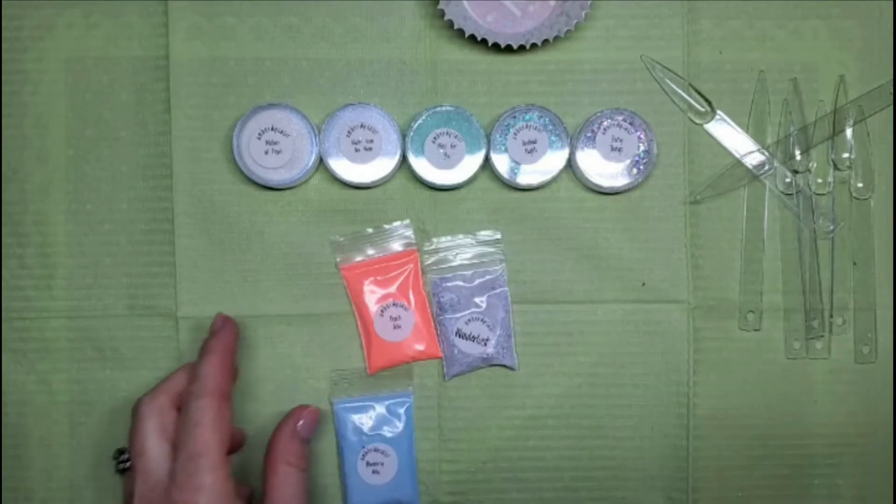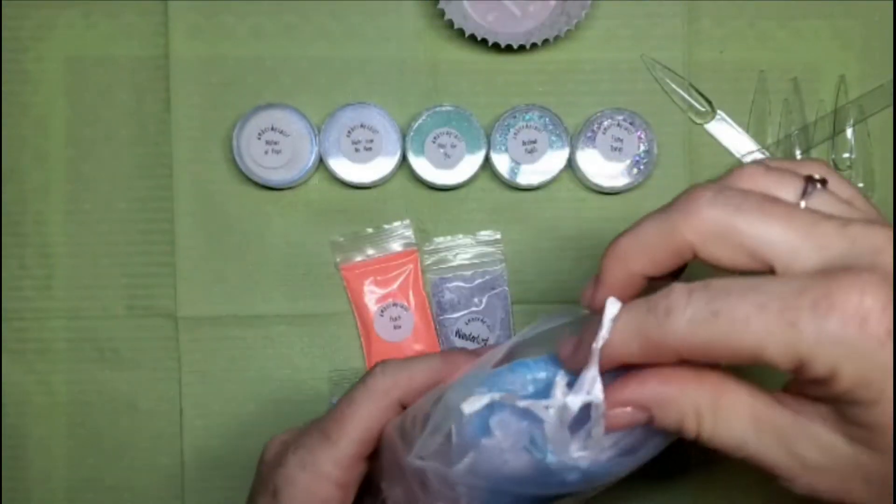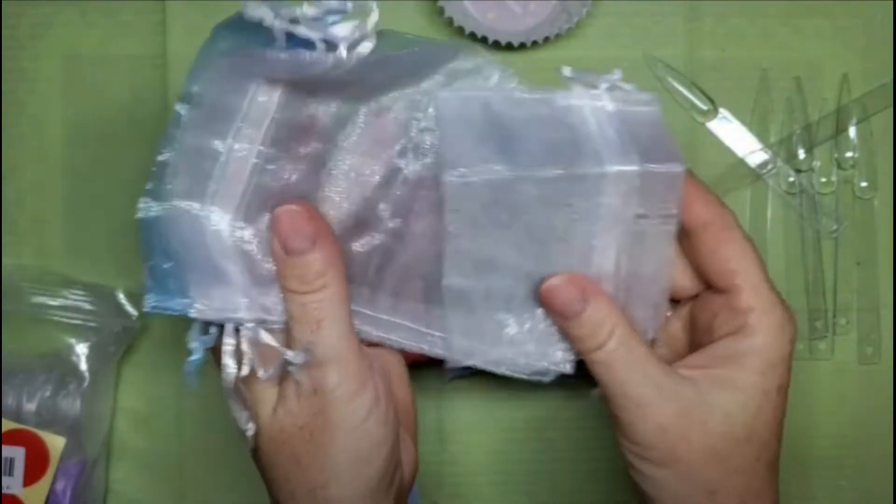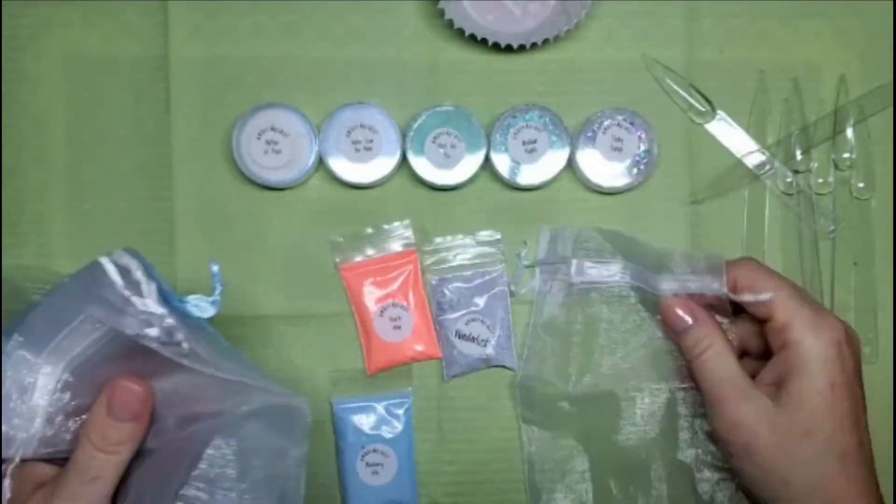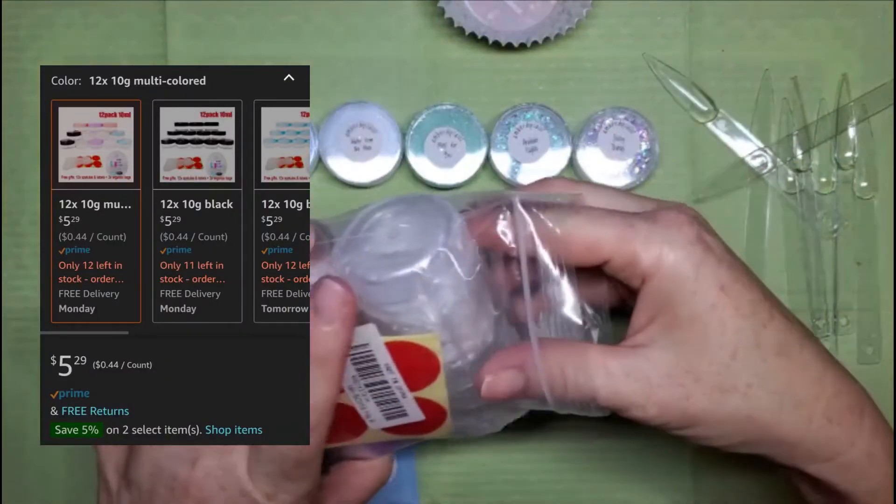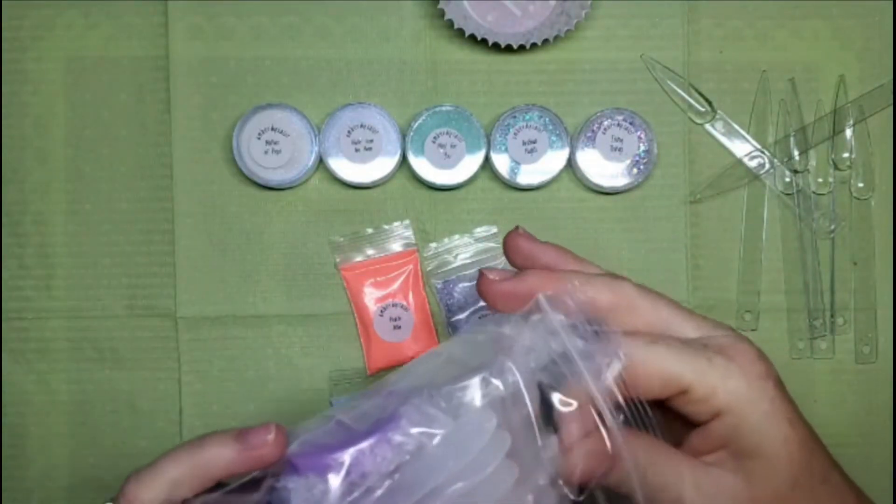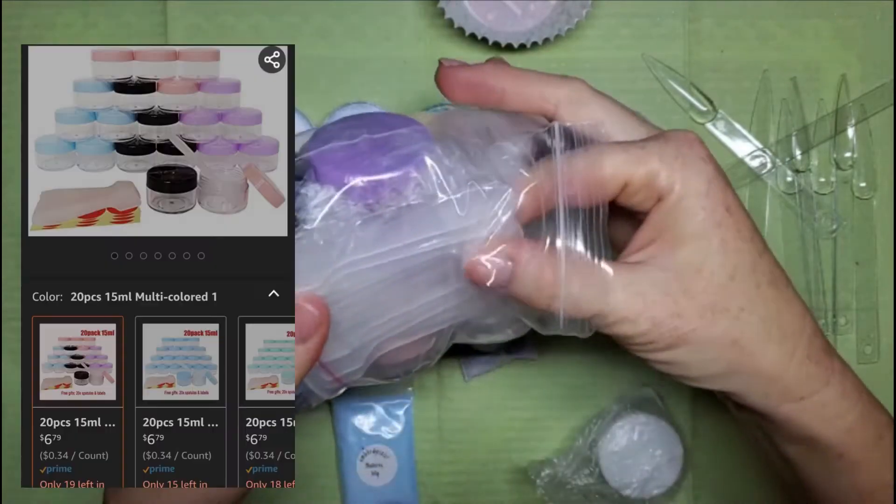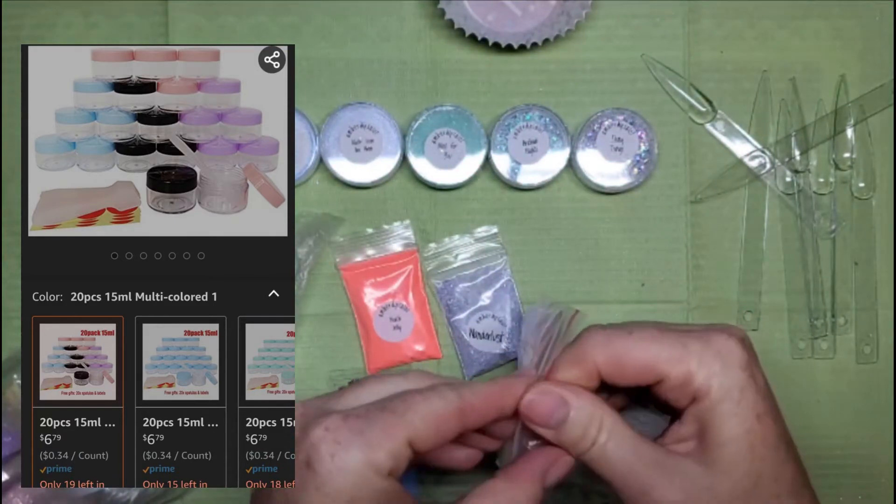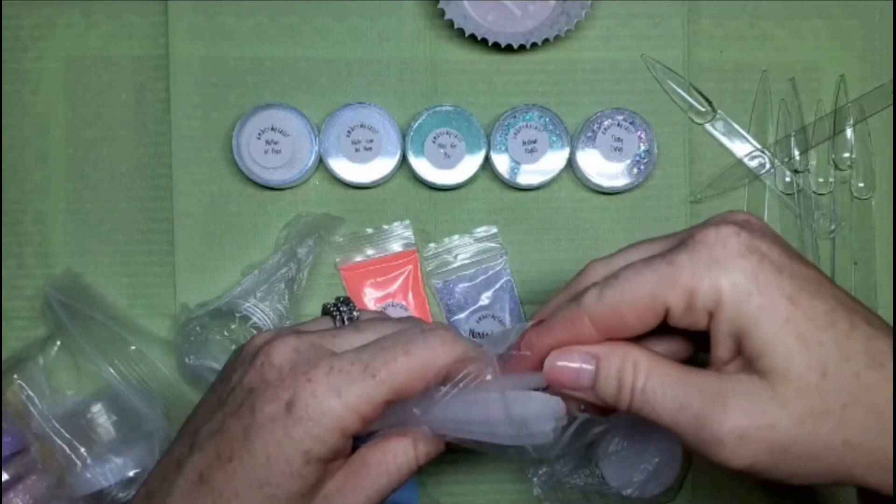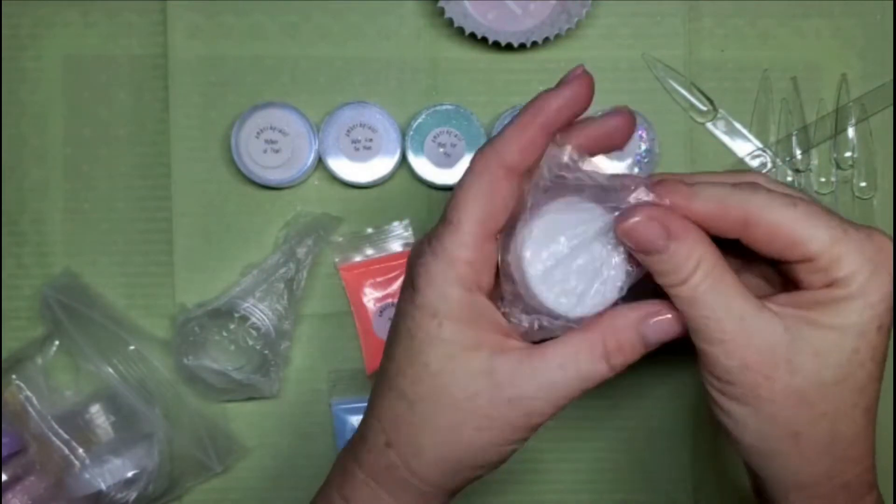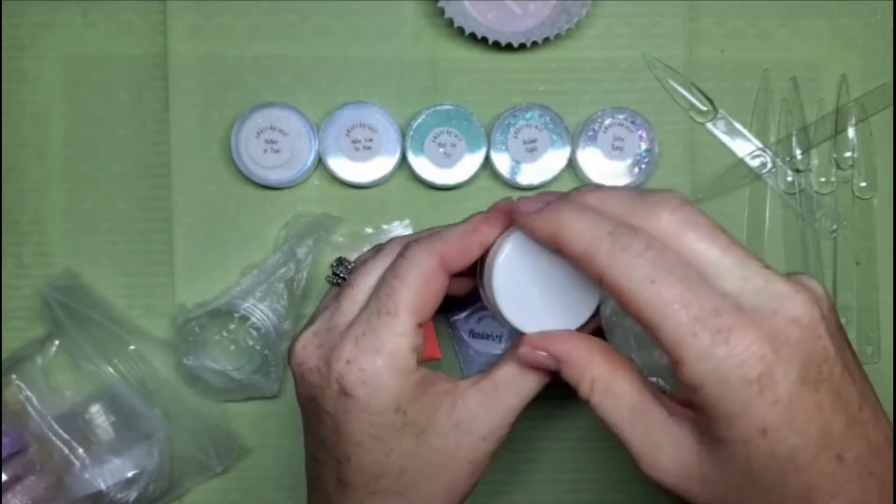So I'm gonna go ahead and get everything ready to swatch these. Now I'm gonna pot the sample dip powders that I received. I got this little kit here on Amazon - look at these cute bags that you get with it! Super cute, you get four of them. These are the 10 gram pots and you get 12 of them. They're multi-colored and they were $5.29 which I thought was a good deal. Then I also got the 15 gram - you get 20 of those. Those came a couple days later but those were $6.79, so I thought that was a pretty good deal.